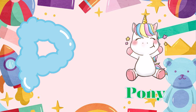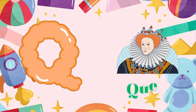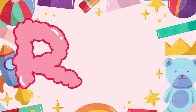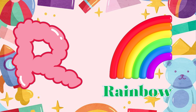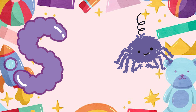P is for pony. P, P, pony. Q is for queen. Q, queen. R is for rainbow. R, R, rainbow.